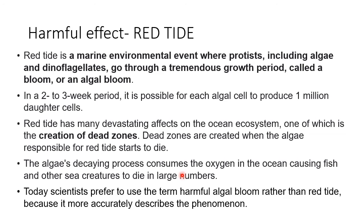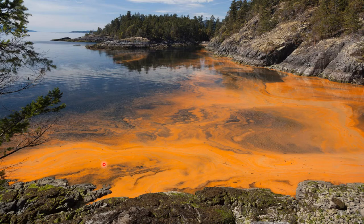Today, scientists prefer to use the term 'harmful algal blooms' rather than 'red tide' because it more accurately describes the phenomenon. In dead zones, the dying algal cells require more oxygen for the decaying process, causing oxygen concentration to fall and leading to the death of fish and other sea creatures. You can see from the image how the algal growth looks — this reddish appearance is why the phenomenon is called red tide.